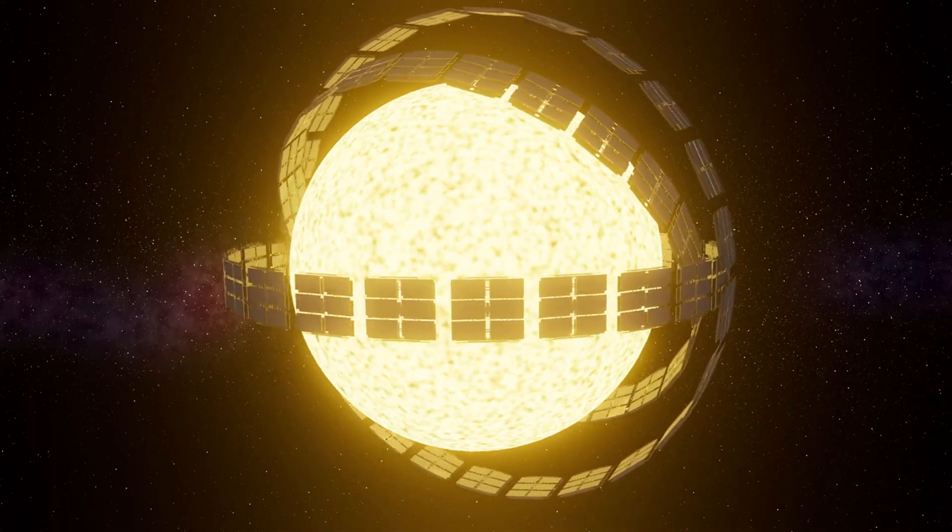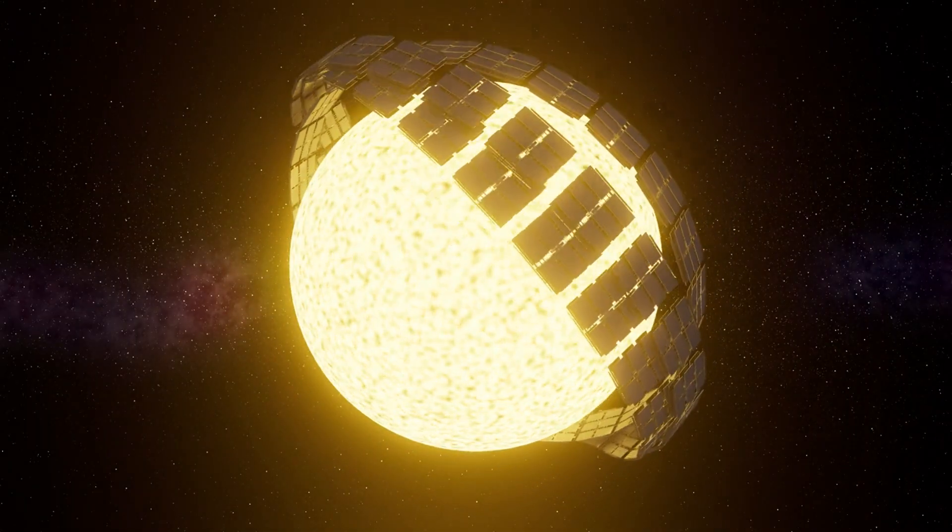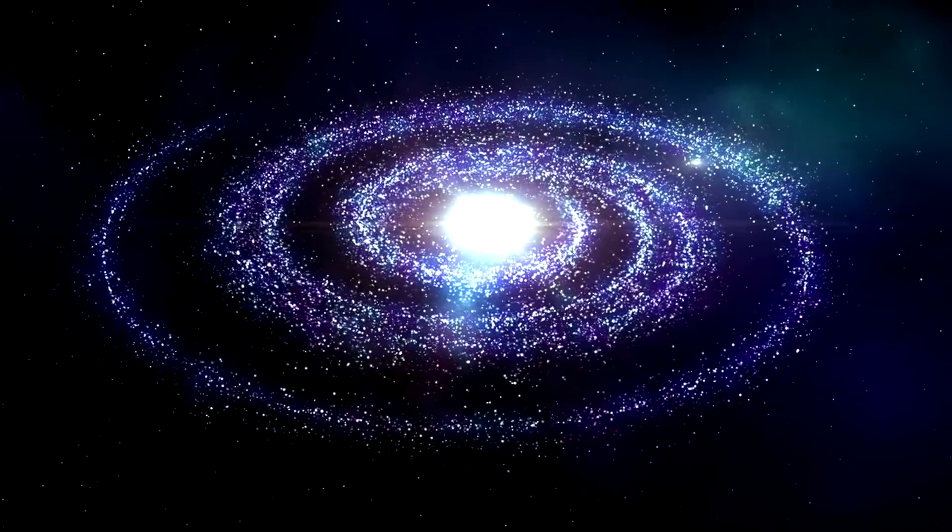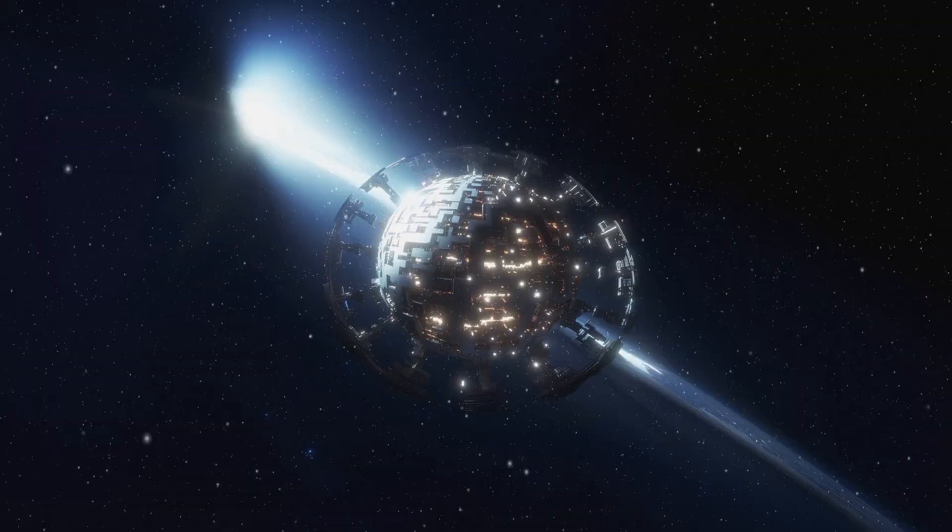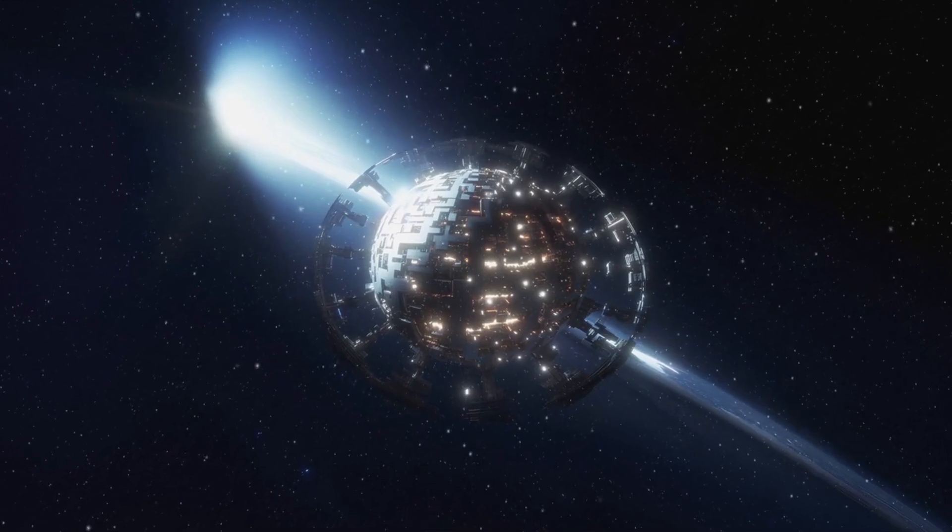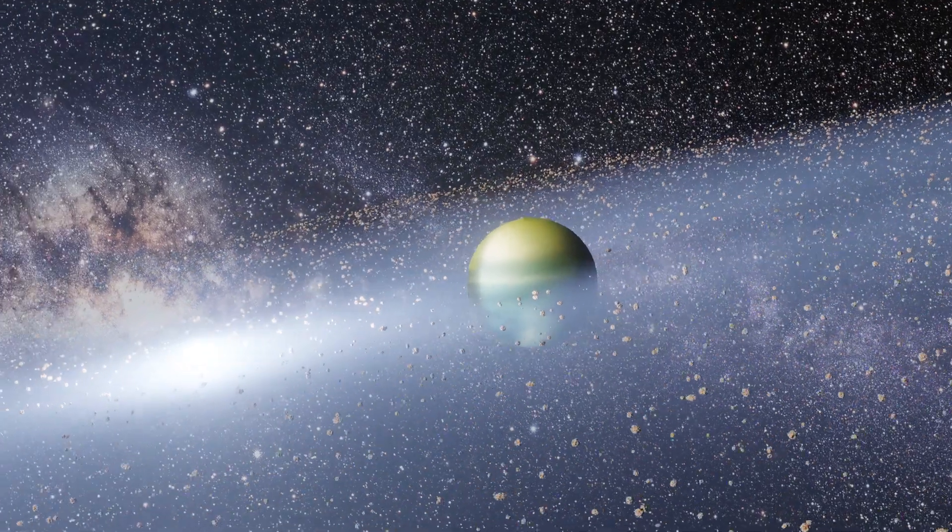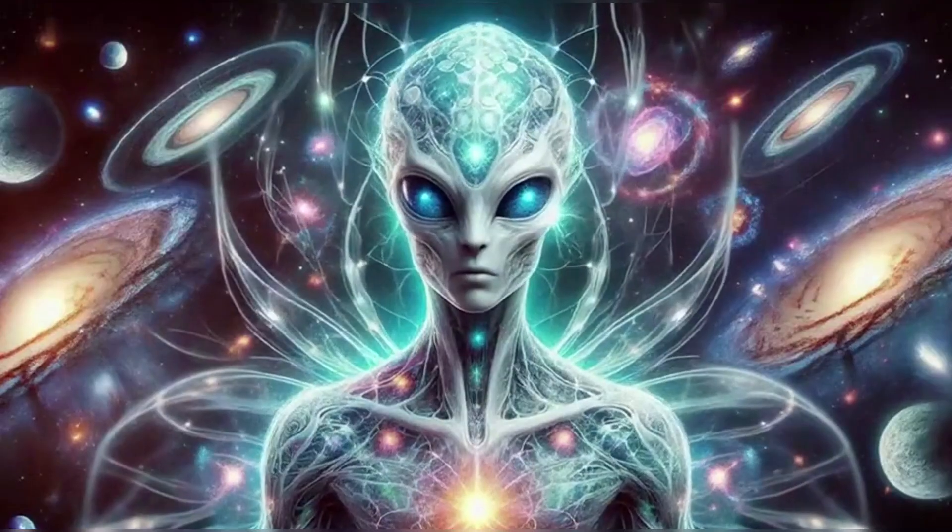To do this, they might build a Dyson Sphere, a megastructure surrounding their star to capture every drop of solar energy. Imagine controlling the fusion of a sun like it's a household battery. They could terraform planets, travel between stars, and create artificial life.